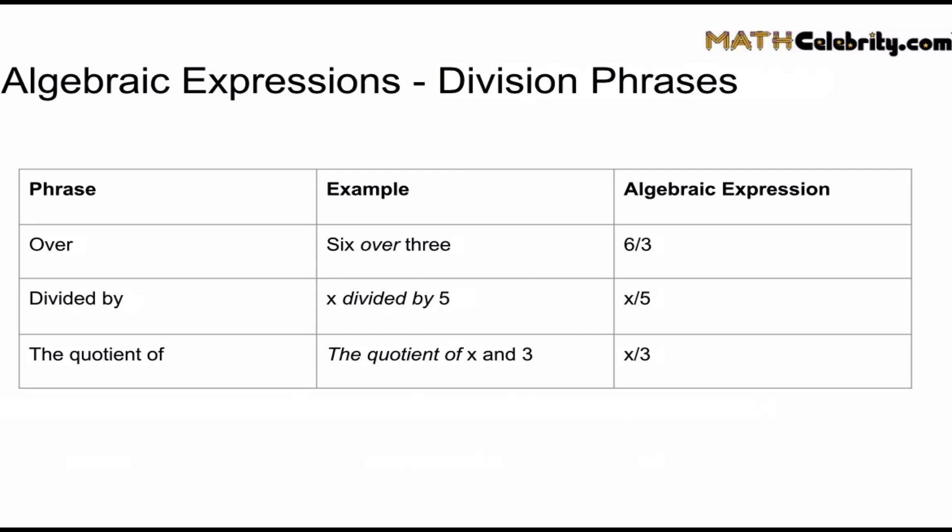Now let's move on to division operational phrases. And the three most common division phrases in algebraic expressions are over, divided by, and the quotient of. And once again, we're building a quotient. And the way this works is, if you have a quotient, you want the numerator first, the operational phrase, then the denominator.